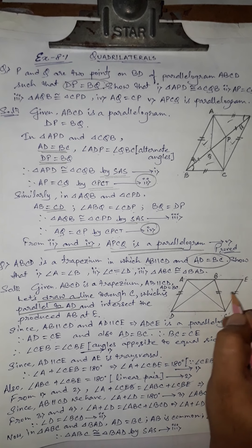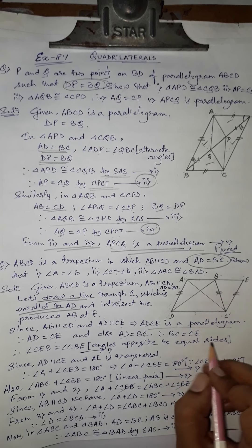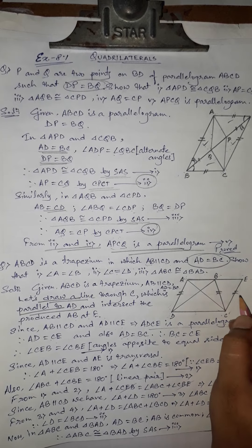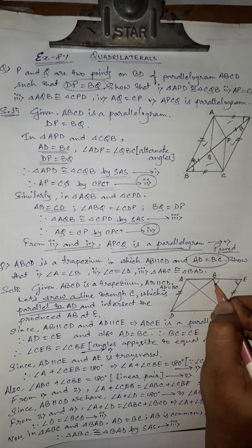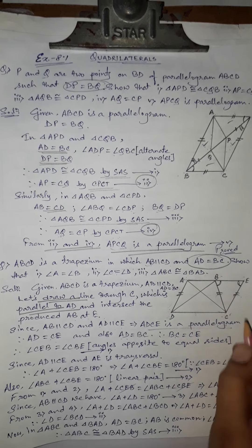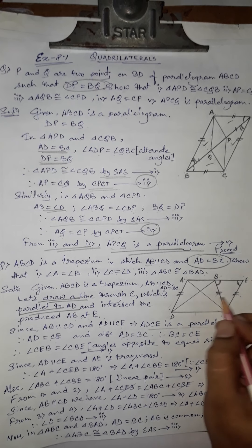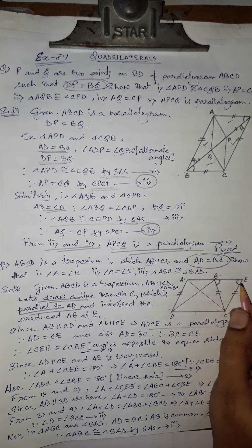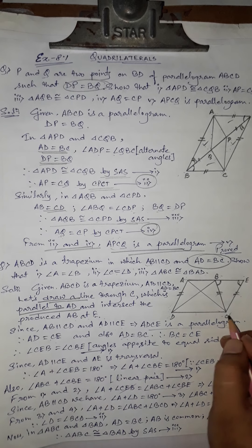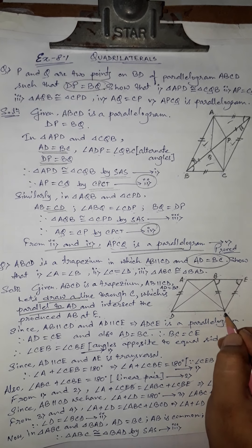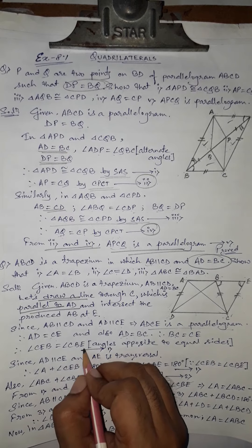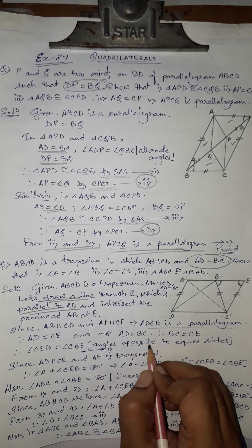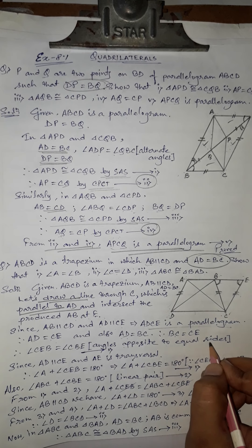Since AD equals CE and AD equals BC, we get BC equals CE. Since BC and CE are two equal sides in triangle BCE, the angles opposite to these equal sides must be equal. So angle CBE equals angle CEB. Reason: angles opposite to equal sides are equal.